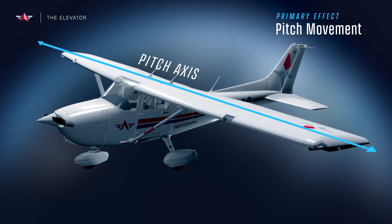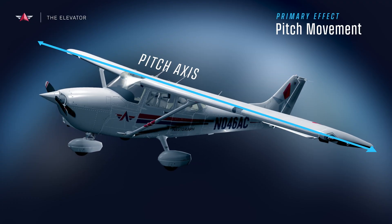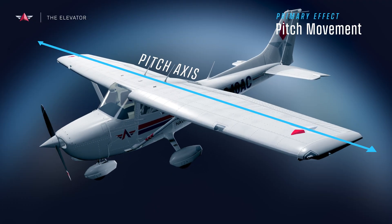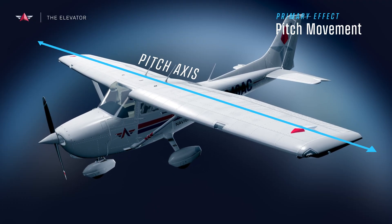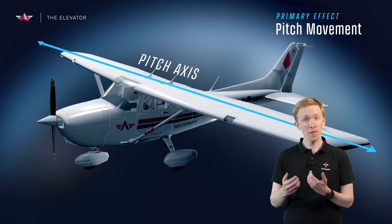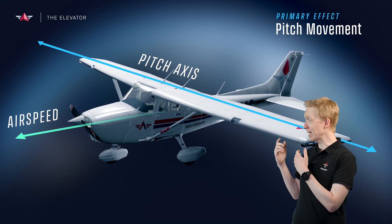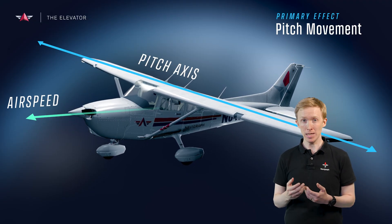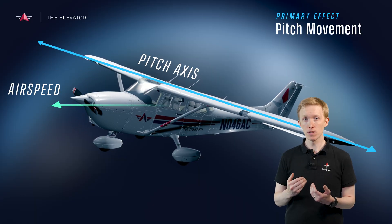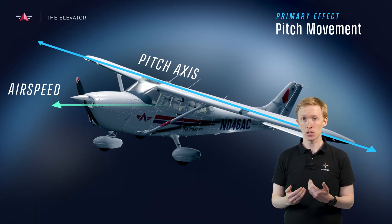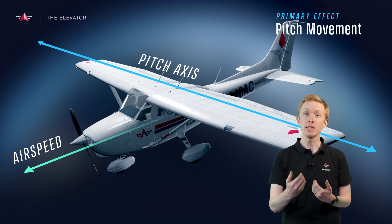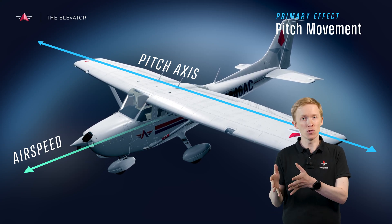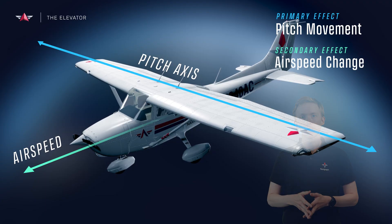The primary effect of the elevator is to raise or lower our nose. As a consequence of pitching up or down, the aircraft will move with or against the force of gravity. If we pitch up, the airspeed will start to decrease, and vice versa — if we pitch down, the airspeed will tend to increase. This causes airspeed changes, and this constitutes the secondary effect of the elevator.